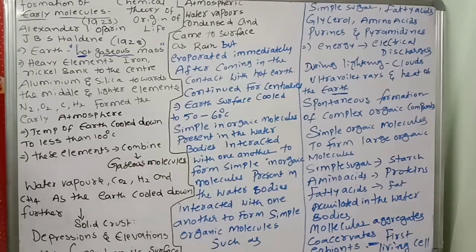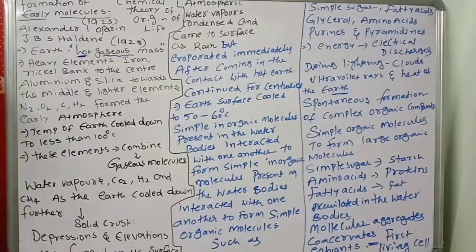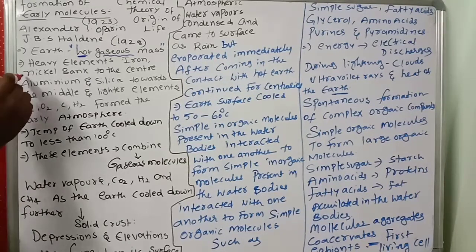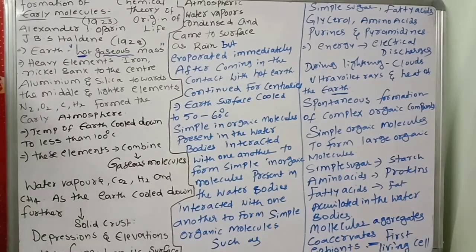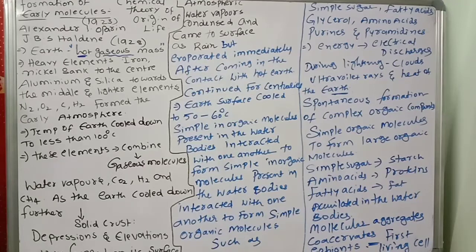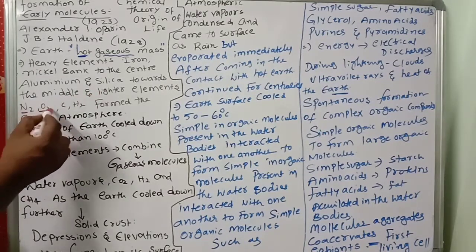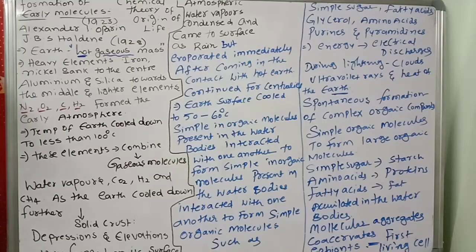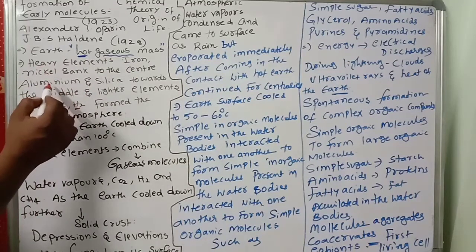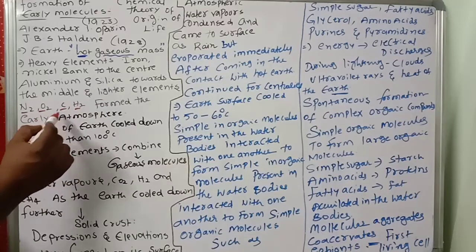The heavy elements like iron and nickel sank to the center. Then aluminium and silica moved towards the middle. Lighter elements such as nitrogen, oxygen, carbon, and hydrogen formed the early atmosphere. So altogether: iron, nickel, aluminium, silica, nitrogen, oxygen, carbon, and hydrogen formed the early atmosphere.